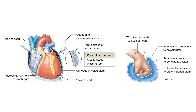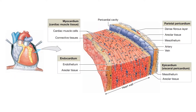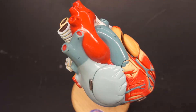The pericardial sac can be thought of as a balloon with a fist put through it. The outside of the balloon corresponds to the parietal pericardium, the inside corresponds to the visceral pericardium, and the space corresponds to the pericardial cavity. The epicardium is another name for the visceral pericardium. The myocardium is the layer just deep to that, and deep to that layer is the endocardium.